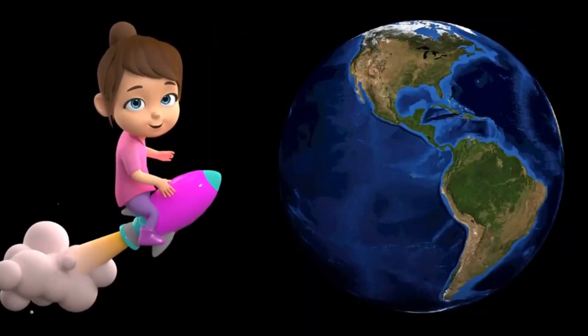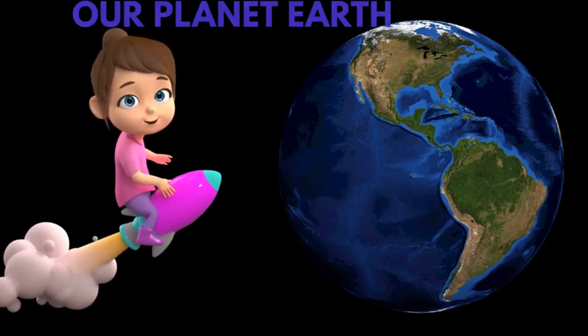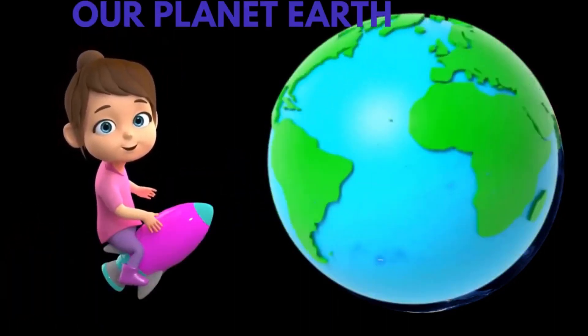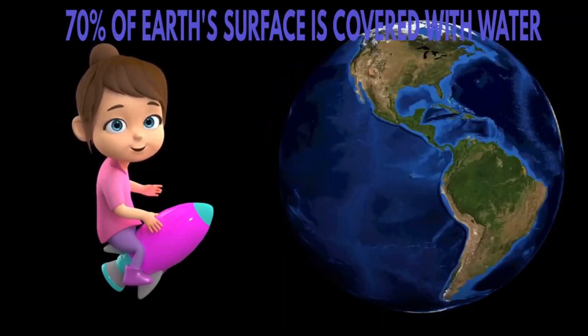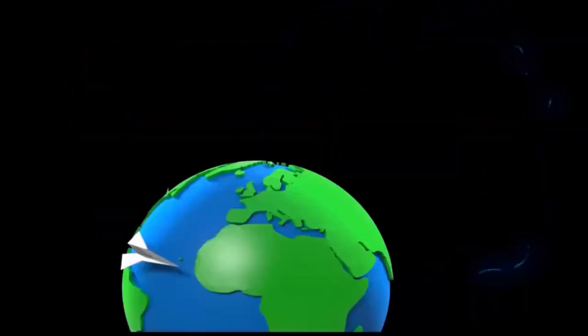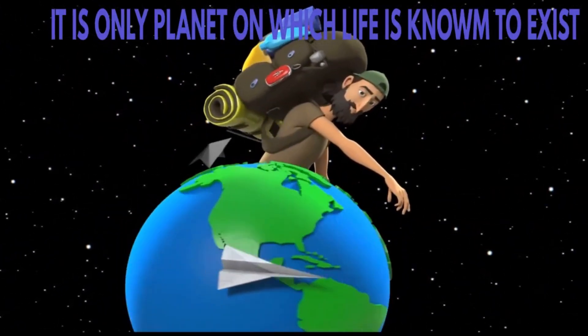The third planet in the solar system is our planet Earth. Nearly 70% of the Earth's surface is covered with water, due to which the Earth is also called the blue planet. It is the only planet on which life is known to exist.